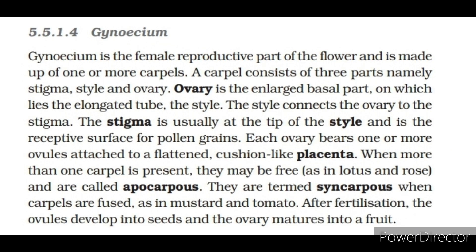Gynoecium is the female reproductive part of the flower and is made up of one or more carpels. A carpel consists of three parts: stigma, style and ovary. The ovary is the enlarged basal part on which lies the elongated tube, the style. The style connects the ovary to the stigma. The stigma is usually at the tip of the style and is the receptive surface for pollen grains. Each ovary bears one or more ovules attached to a flattened, cushion-like placenta. When more than one carpel is present, they may be free, as in lotus and rose, and are called apocarpous. They are termed syncarpous when carpels are fused, as in mustard and tomato. After fertilization, the ovules develop into seeds and the ovary matures into a fruit.